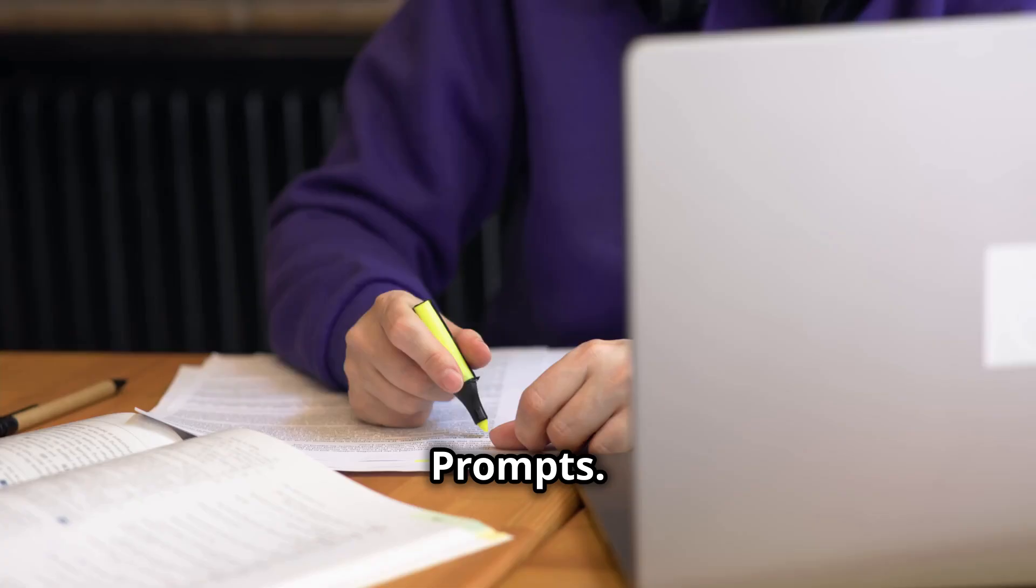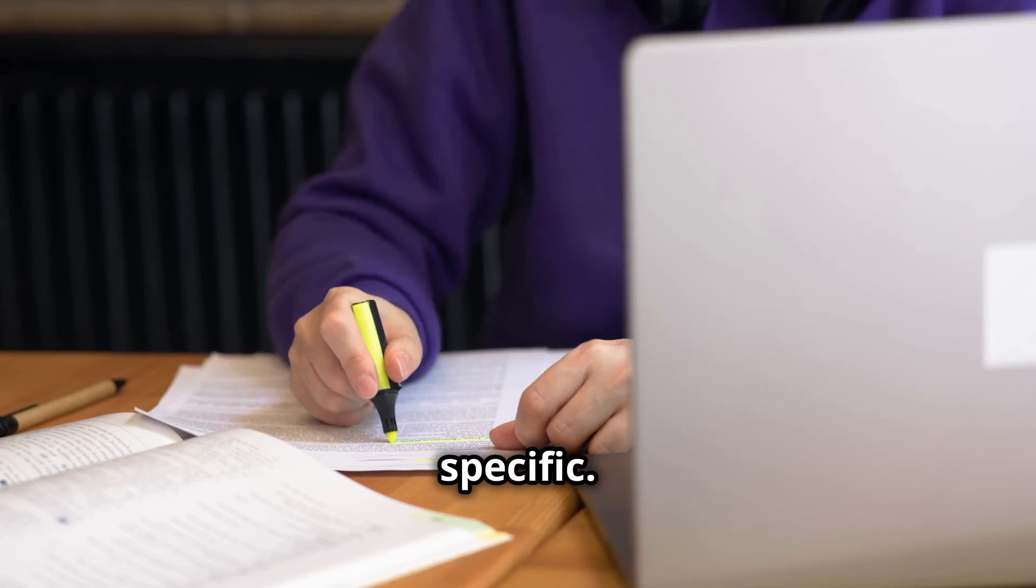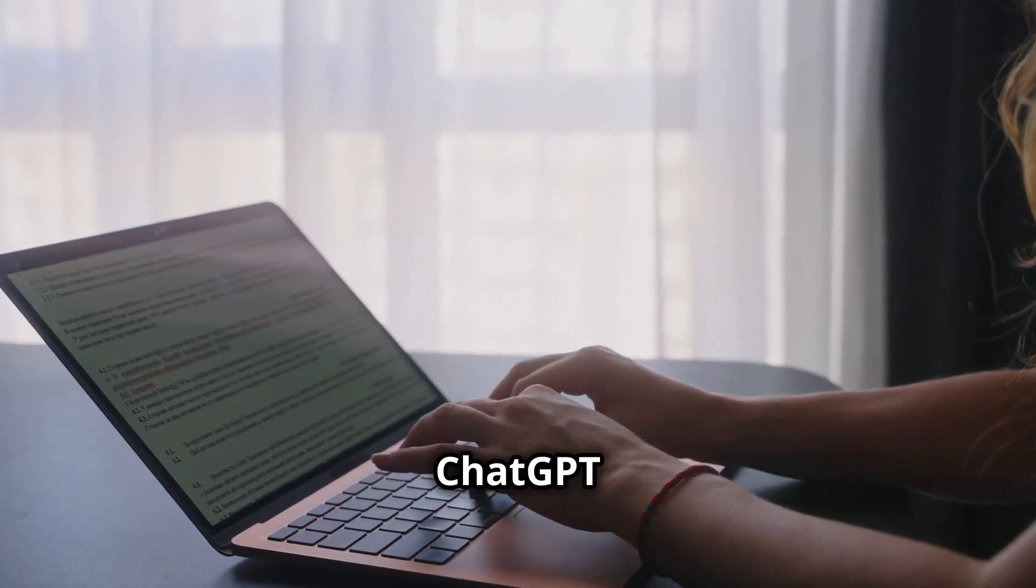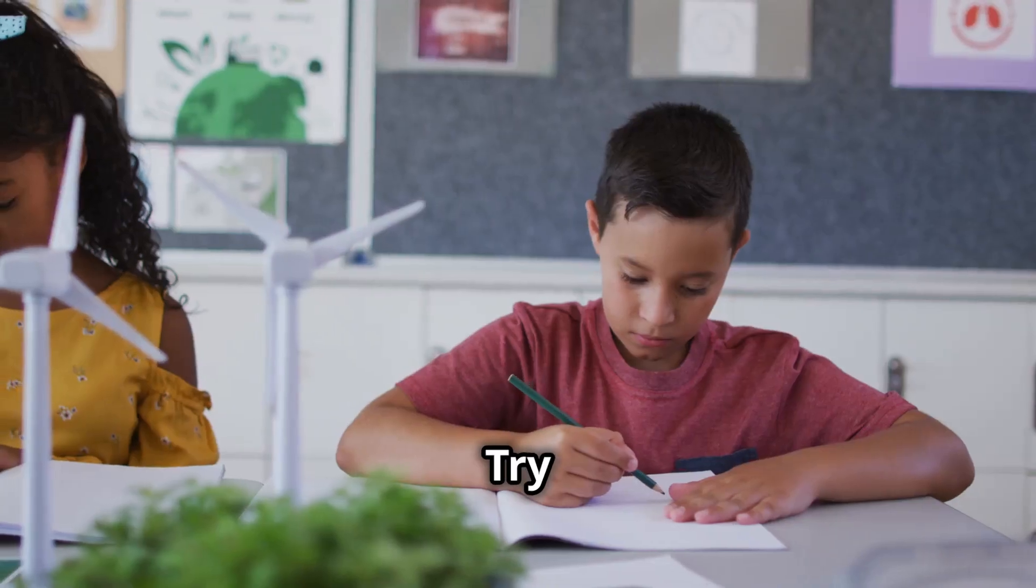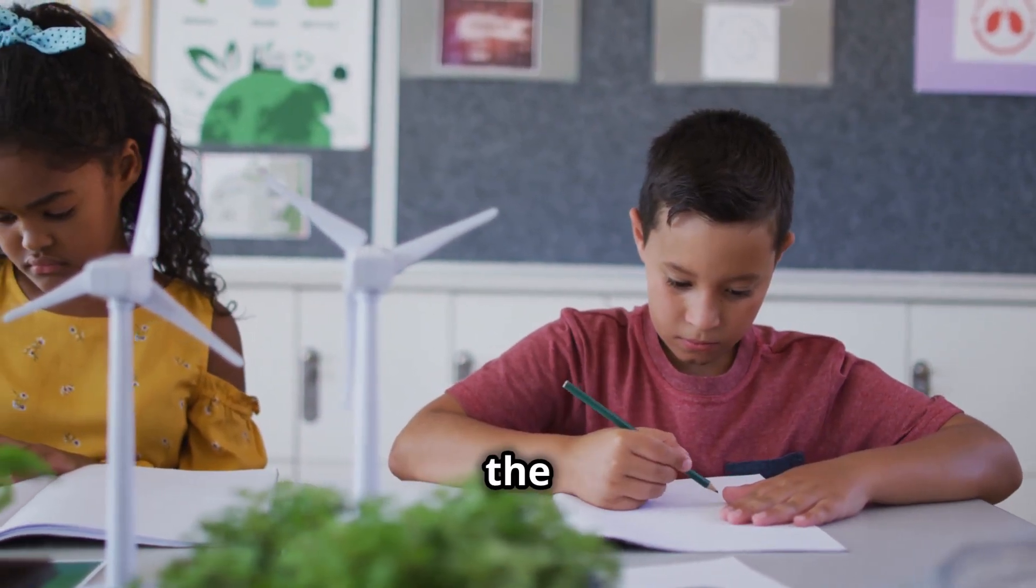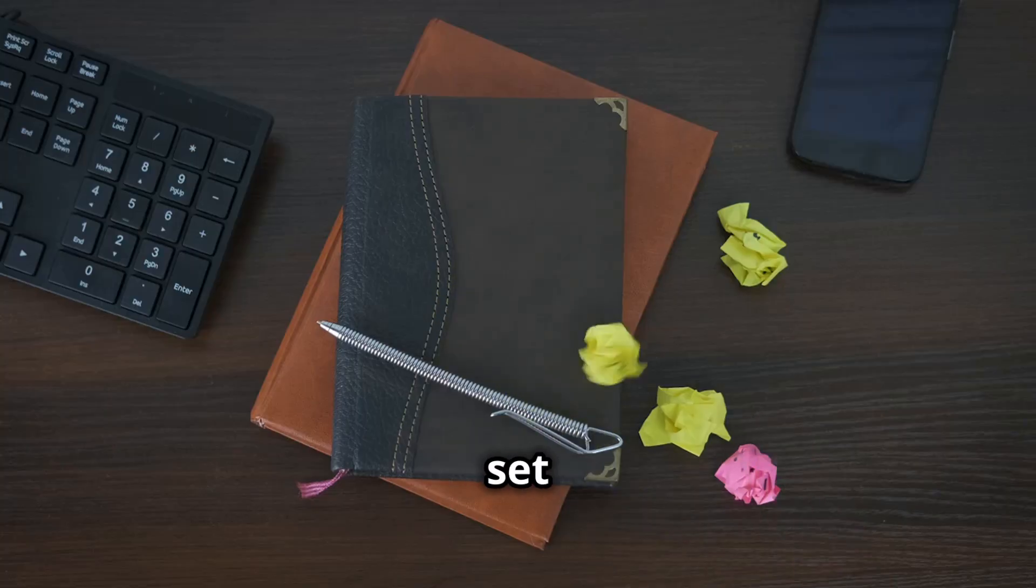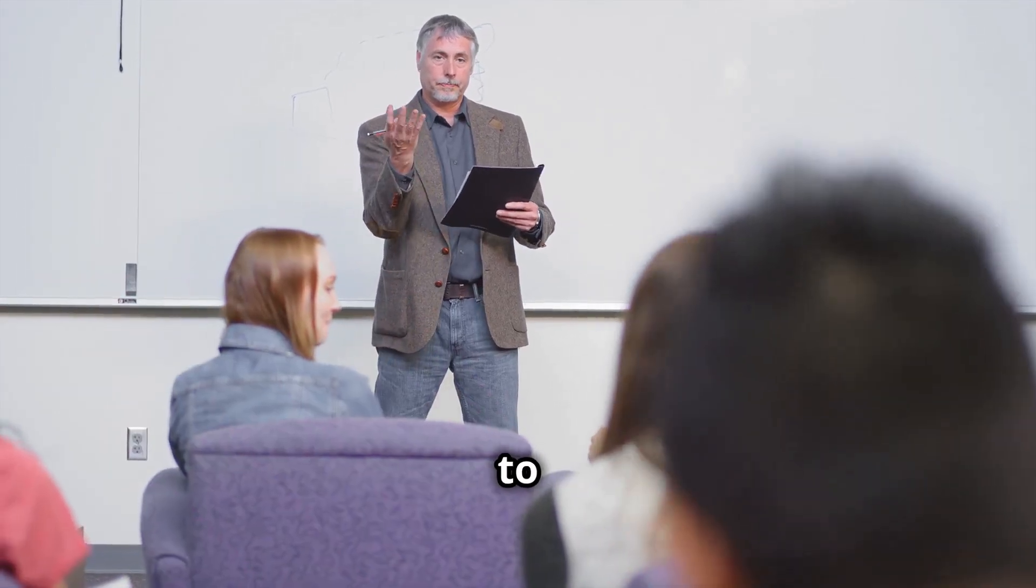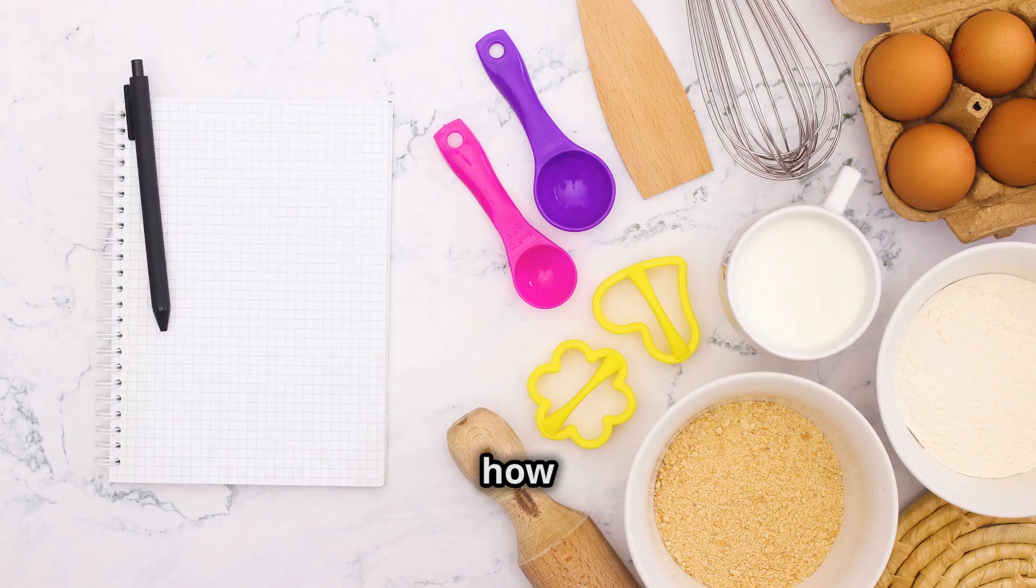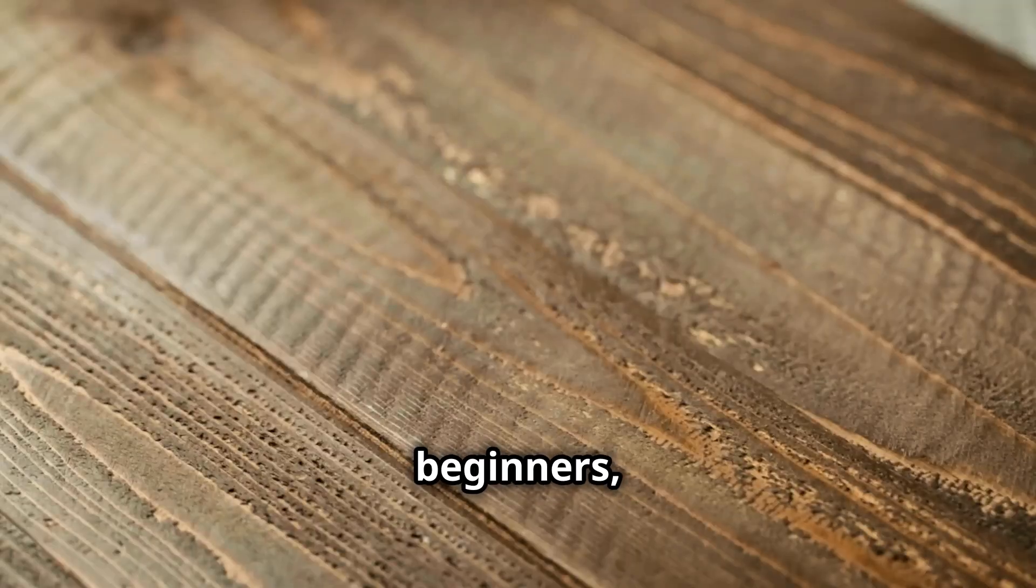How to write effective prompts. Here are some tips for creating effective prompts. One, be specific. Include all the details ChatGPT needs to understand your request. Instead of write an essay, try write a 300-word essay about the importance of renewable energy for school students. Two, set a clear objective. Tell ChatGPT exactly what you want it to do. Instead of explain how to bake a cake, try explain how to bake a chocolate cake for beginners, step by step.